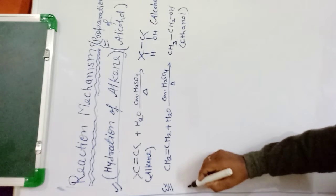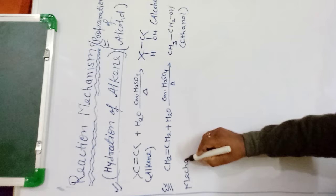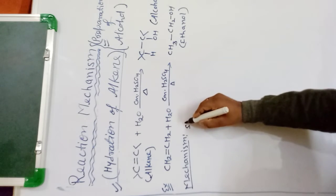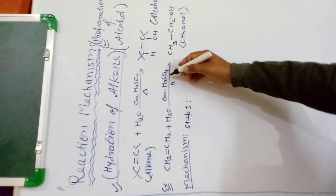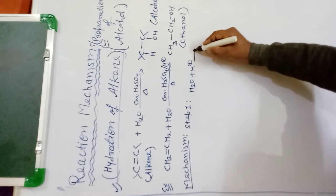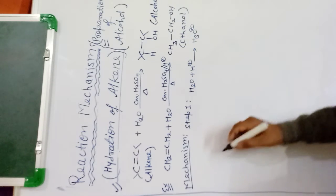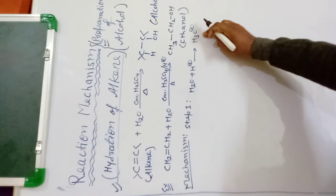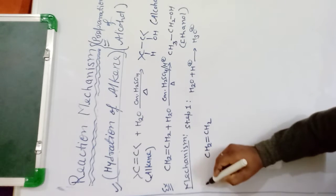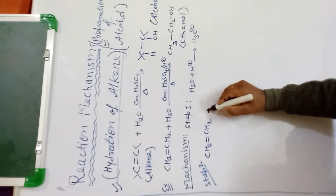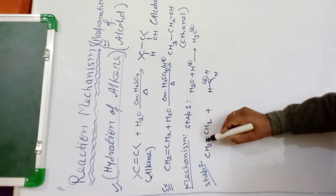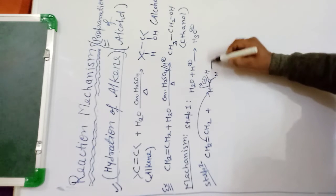Now we will discuss the mechanism. It occurs in several steps. In step one, sulfuric acid provides a proton; H₂O reacts with this proton to convert into H₃O⁺ (hydronium ion). This H₃O⁺ then reacts with ethene — CH₂=CH₂ — in step two, along with HOH.